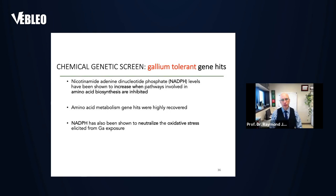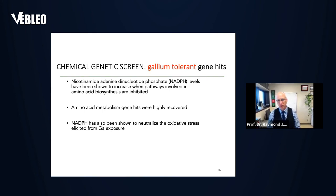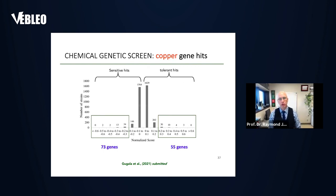For tolerance to gallium, we see that particular genes involved in iron uptake — if removed — produce tolerance, because the gallium will piggyback or Trojan horse along those systems to get into the cell to affect the iron-sulfur system. We also observed that NADPH levels are increased when pathways involved with amino acid biosynthesis are inhibited. Amino acid biosynthesis was a large target group under the tolerant category. NADPH is critical to neutralize oxidative stress propagated through free amino acids, so decreasing free amino acid content and increasing NADPH levels helps deal with the oxidative stress produced by released iron.